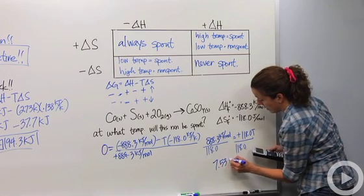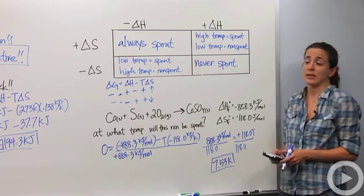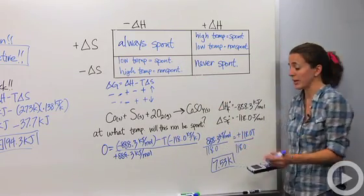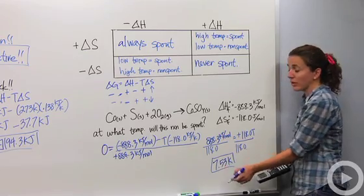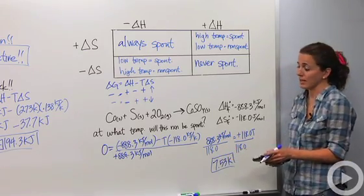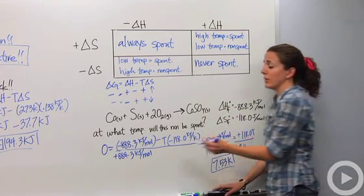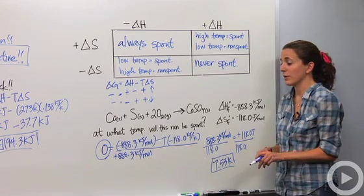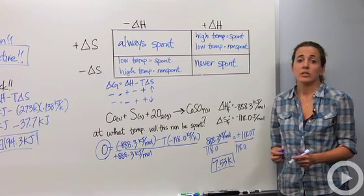T equals 7.53 Kelvin. This is the threshold — anything below this temperature will be spontaneous, anything above will be non-spontaneous. When you come across this type of question, set delta G to zero to find when the reaction transitions between spontaneous and non-spontaneous. That is Gibbs free energy in a nutshell.